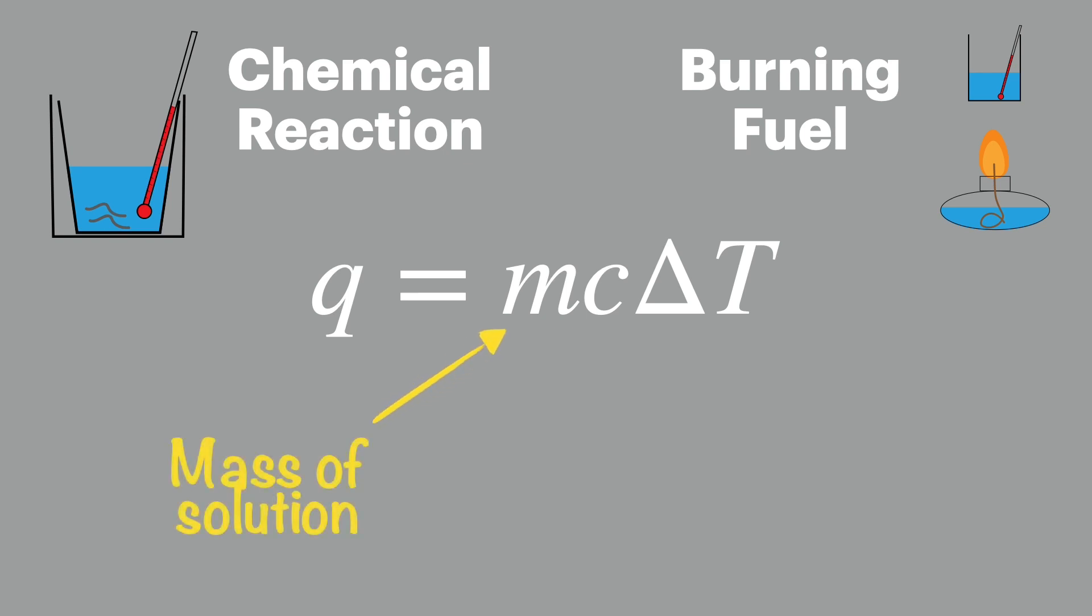For our chemical reaction on the left, the mass part of the equation comes from the mass of the reacting solution. For our fuel burner on the right, the mass here comes from how much water we're heating above the fuel burner.